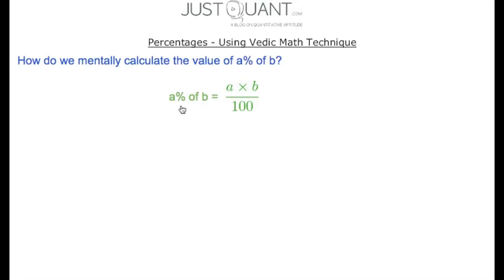Hello all, in this video on JustQuant we will see how to mentally calculate the value of A% of B. To start with, the value of A% of B is mathematically given as A times B by 100. From this definition we can see that the technique to quickly calculate the value of A% of B depends on the calculation of the product of A and B.